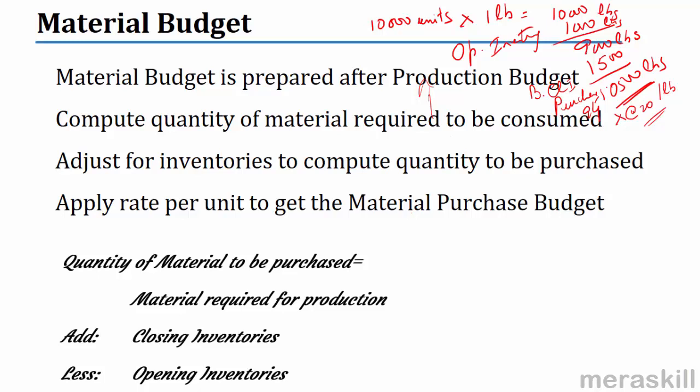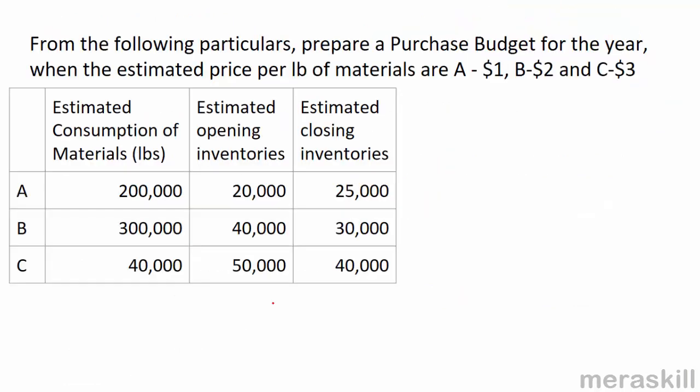The quantity of material to be purchased equals material required for production, plus closing inventories, less opening inventories. From the following particulars, prepare a purchase budget for the year when the estimated price per pound of materials is $1, $2, and $3 for materials A, B, and C respectively.